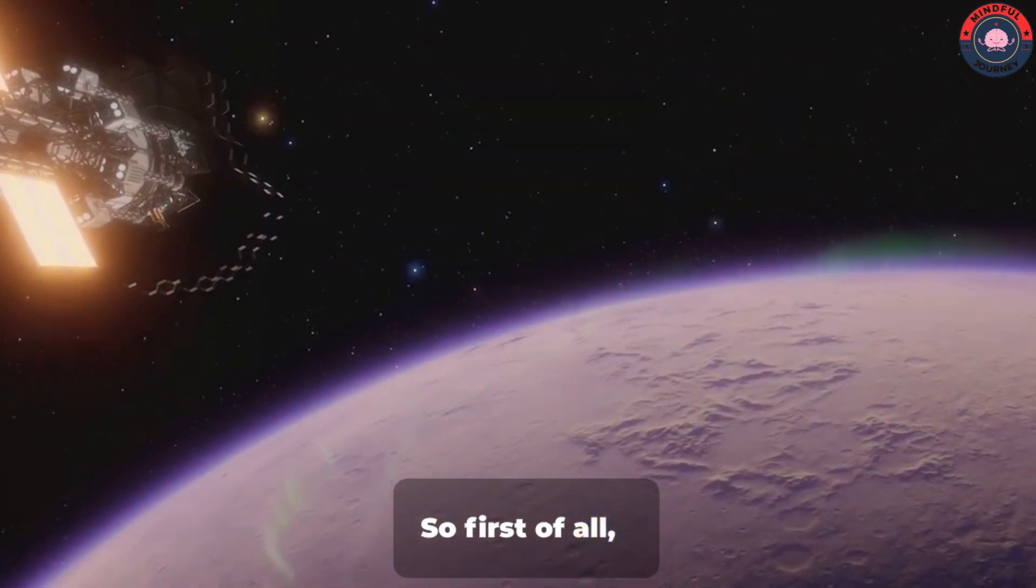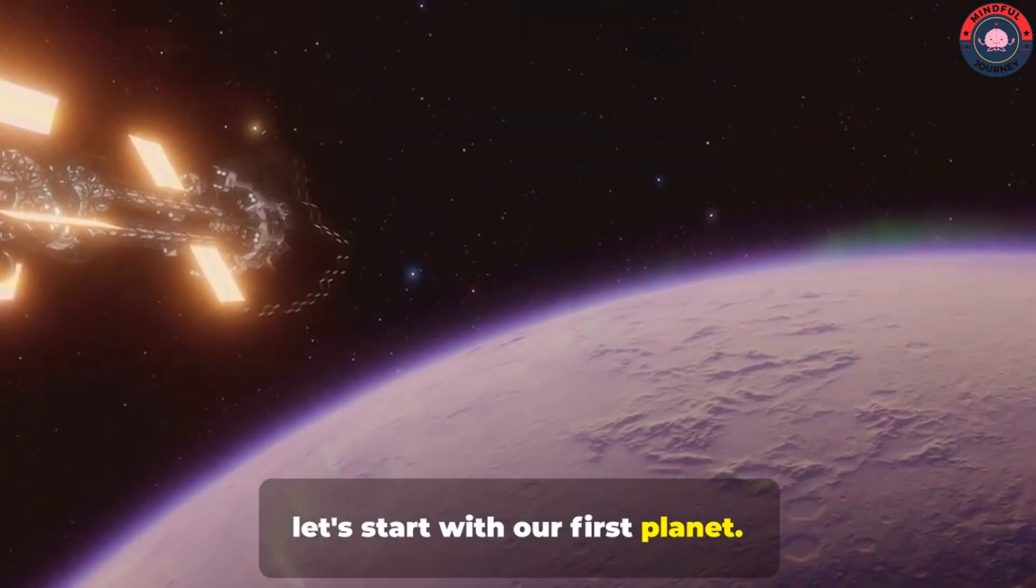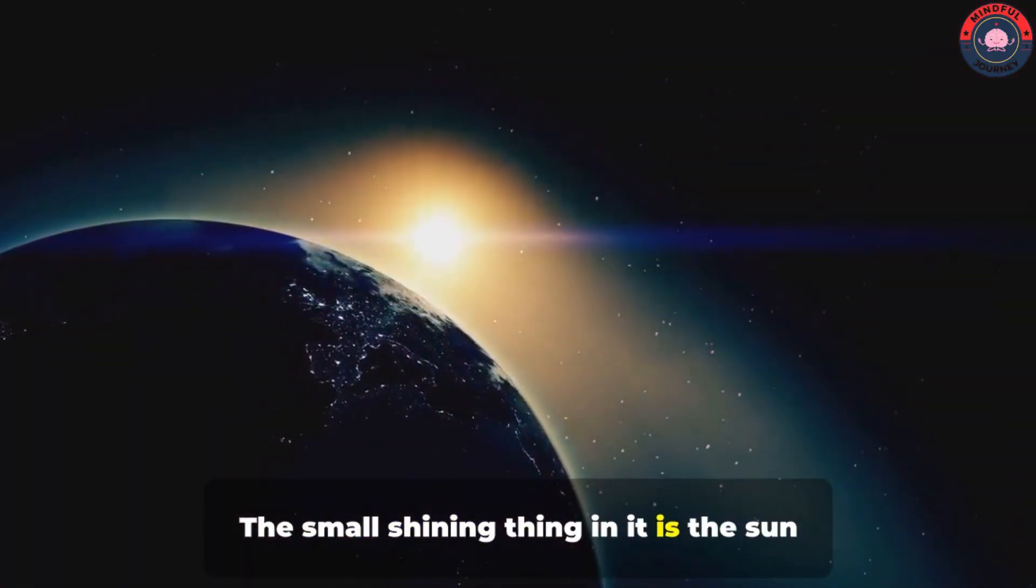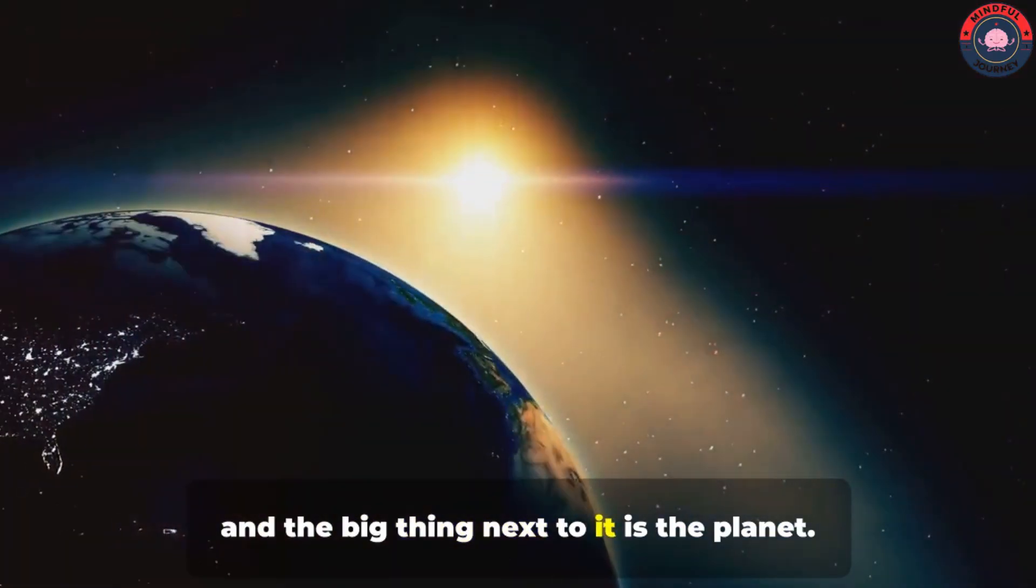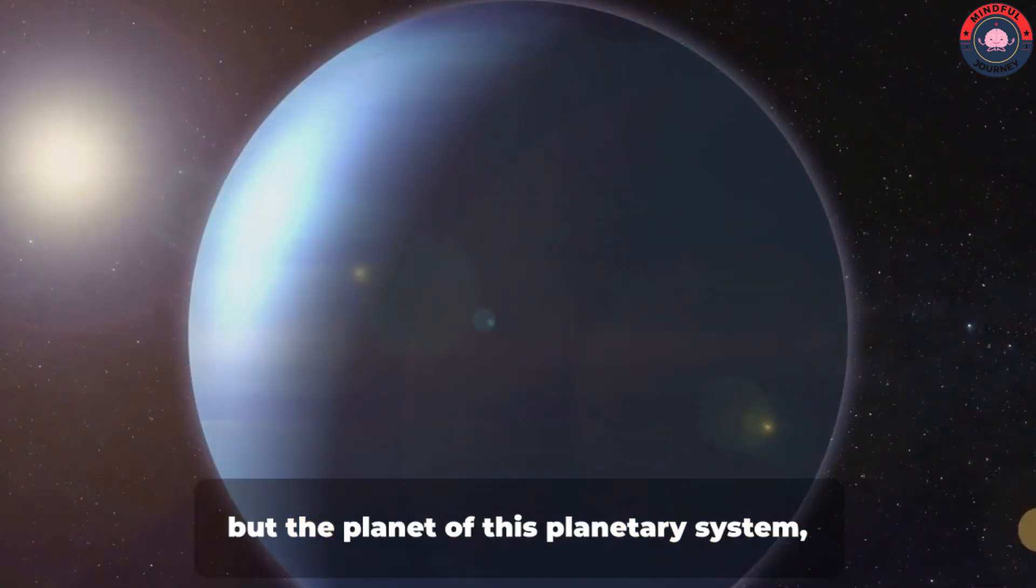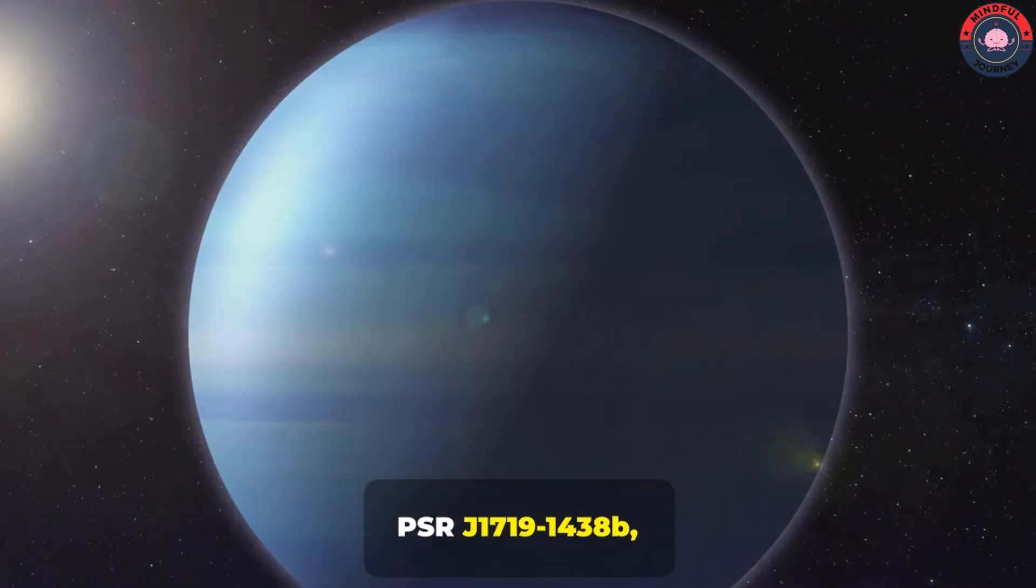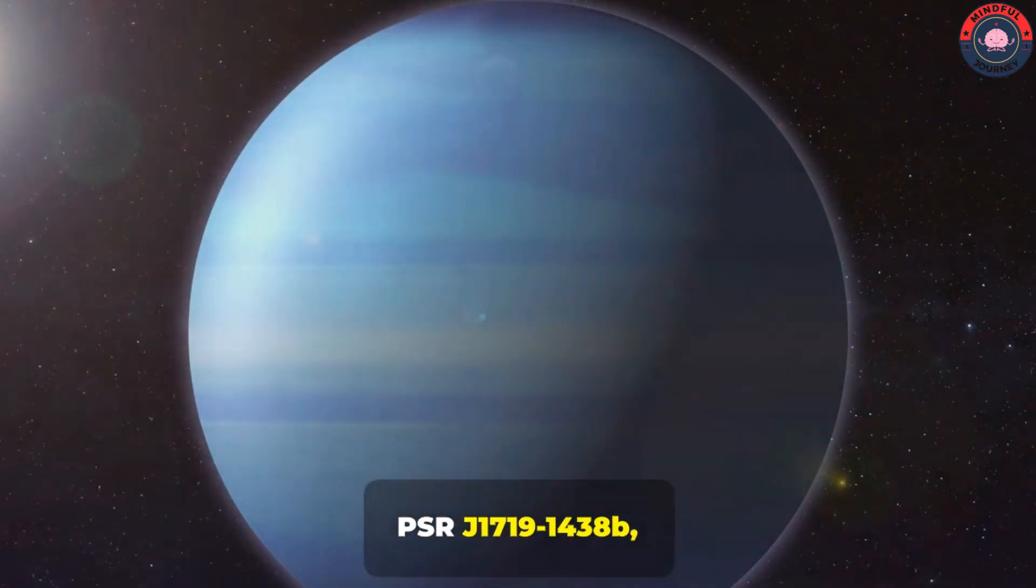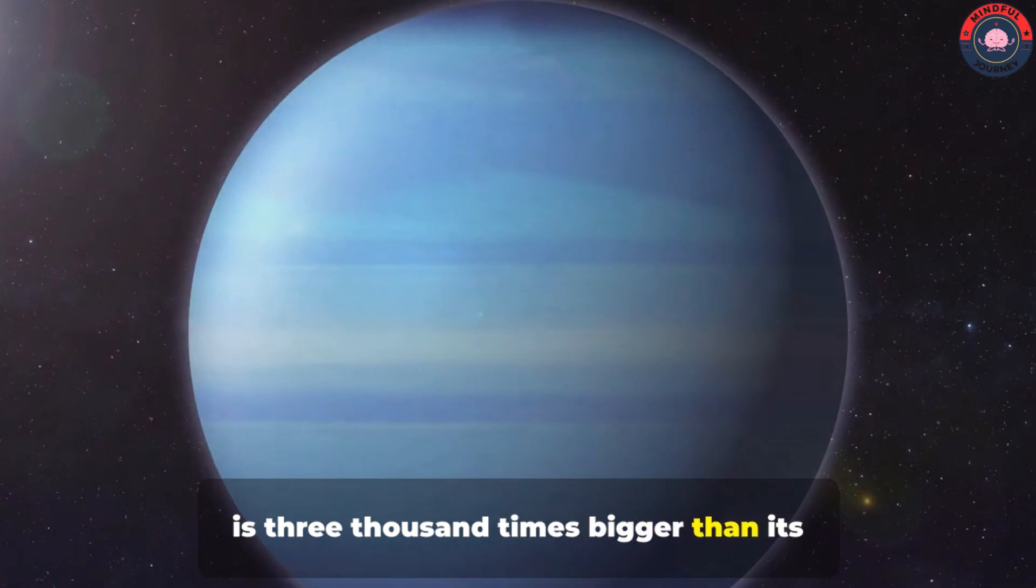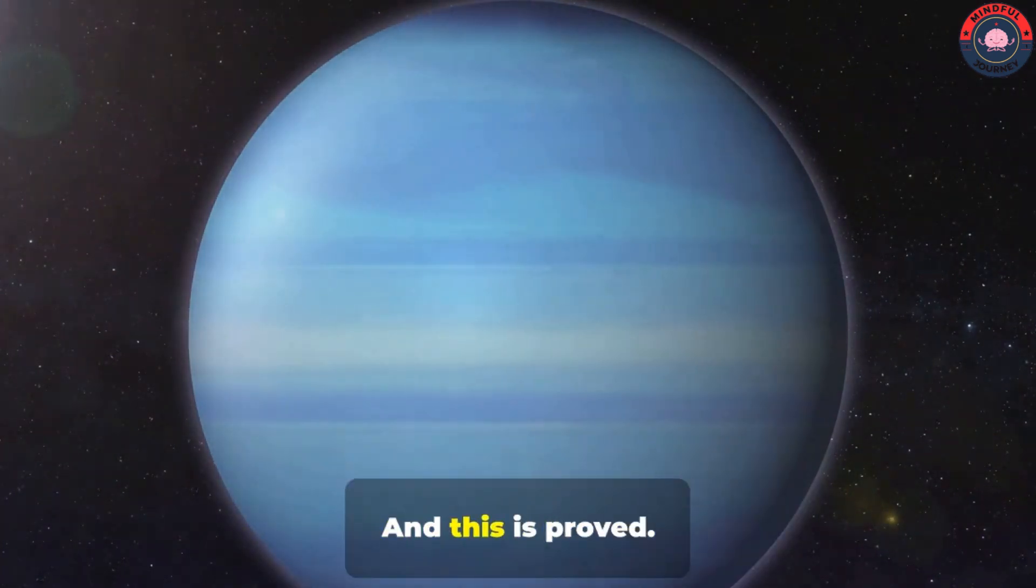So, first of all, let's start with our first planet. The small shining thing in it is the sun, and the big thing next to it is the planet. And you won't believe it, but the planet of this planetary system, PSR J1719-1438b, is 3,000 times bigger than its host star. And this is proved.